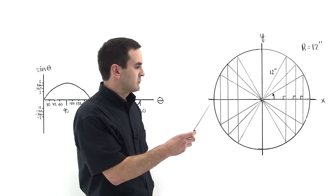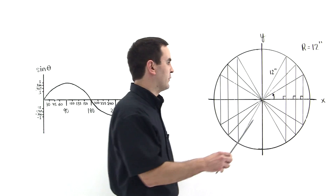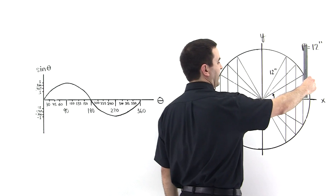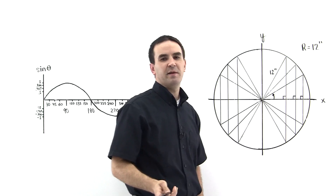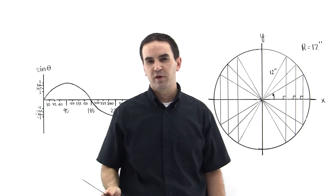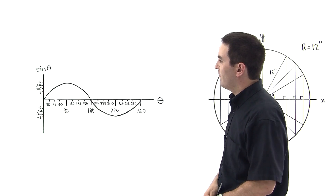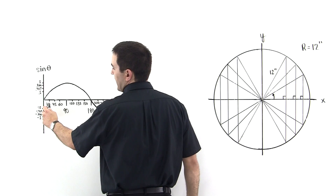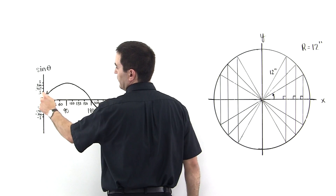Let's do the first one for 30 degrees. We look at this triangle, measure the height, and the height is 6 inches. So 6 divided by 12 is 0.5. We come over to the graph, out to 30 degrees, and we see that 0.5 is on the graph, lo and behold.